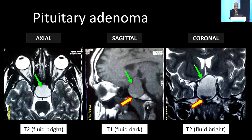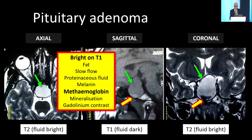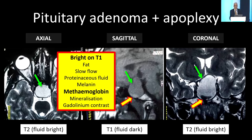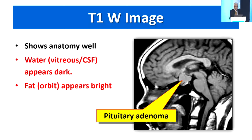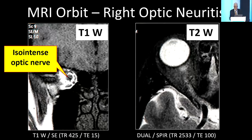One interesting finding: on T1 you can see a little hyperintensity in the lower part of the tumor. Very few things are hyperintense on T1, and in this particular case it happens to be bleeding into the tumor — this is an example of pituitary apoplexy. To summarize: T1 images show anatomy very well, and we identify T1 because the fluid appears dark.